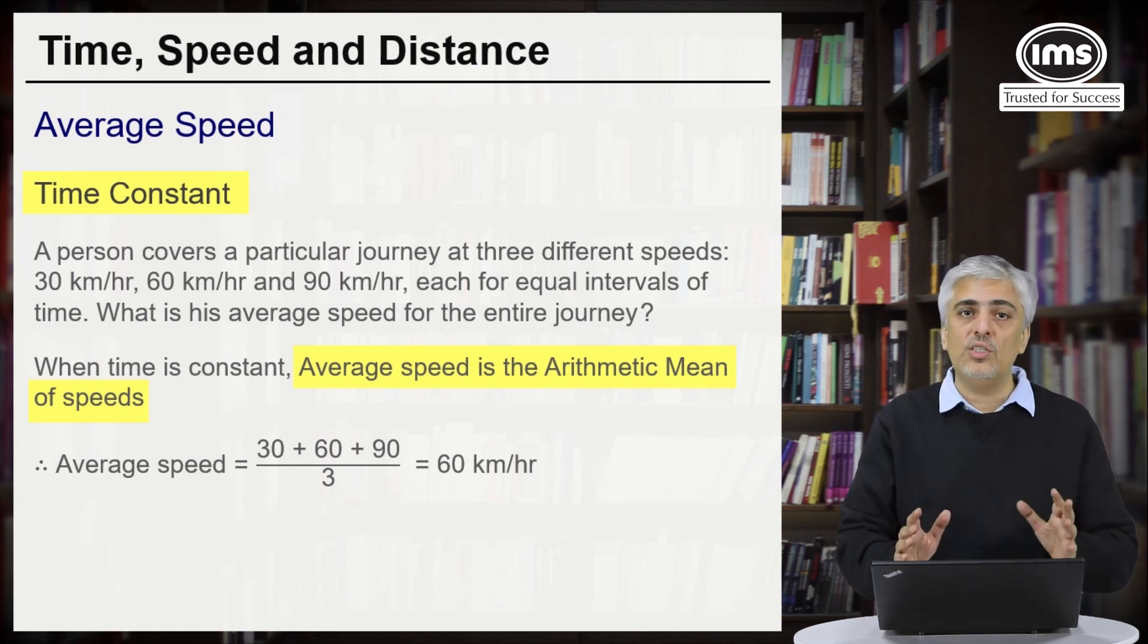Again, if you don't want to use this, you can go back to your original method. Average speed is total distance upon total time. What you could have easily done over here was assume the time to be one hour for every stretch and you would have got the same answer. So that covers your concept on average speed. We've done enough examples for you to explain the whole concept well.